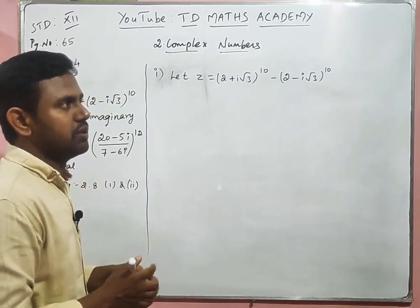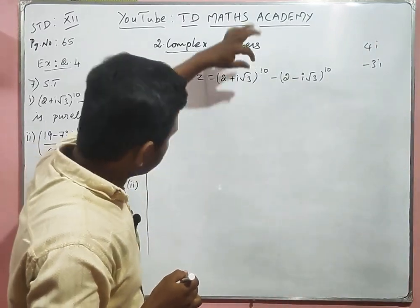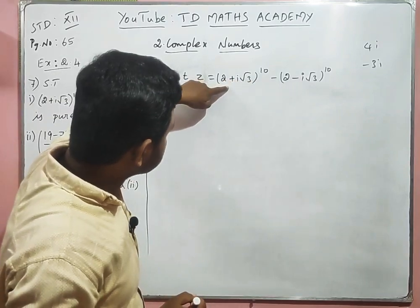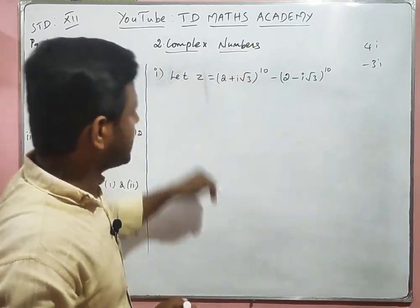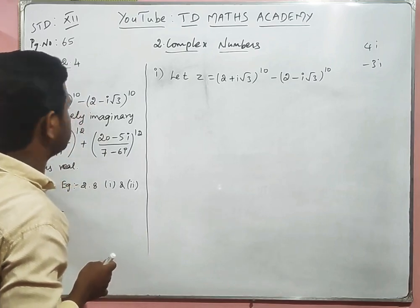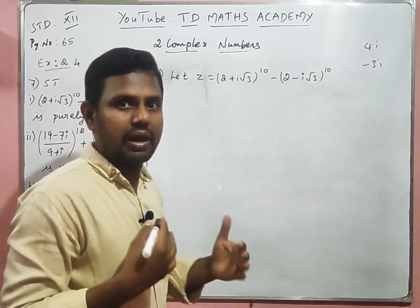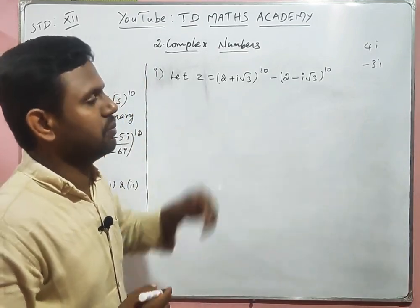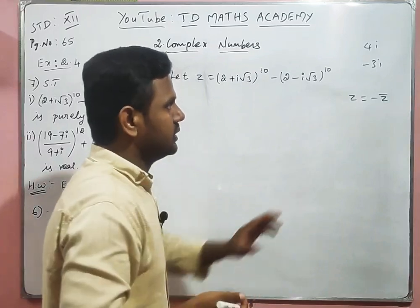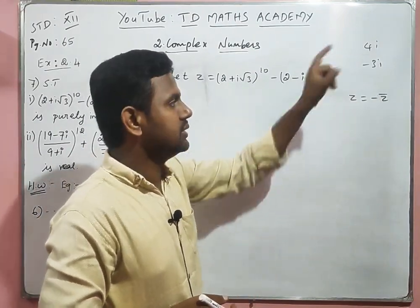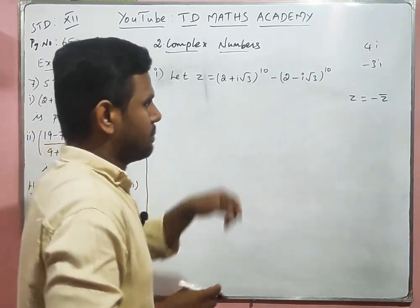Numbers like 4i, 3i are called purely imaginary numbers. Now, using properties from the previous video: if we can prove Z = −Z̄, then Z is purely imaginary. That is the property and the key explanation.